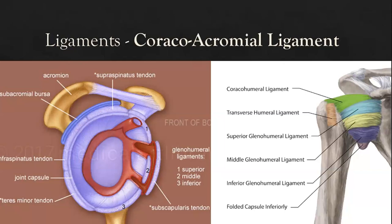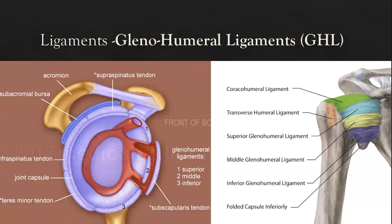The coracoacromial ligament runs from the anterior edge of the acromion to the tip of the coracoid. Its function is to help stabilize the humeral head and avoid anterior inferior translation. The glenohumeral ligaments are thickenings of the anterior inferior portion of the joint capsule and exert their function based on the direction of their fibers. They do not act in all possible movements but only in certain positions.